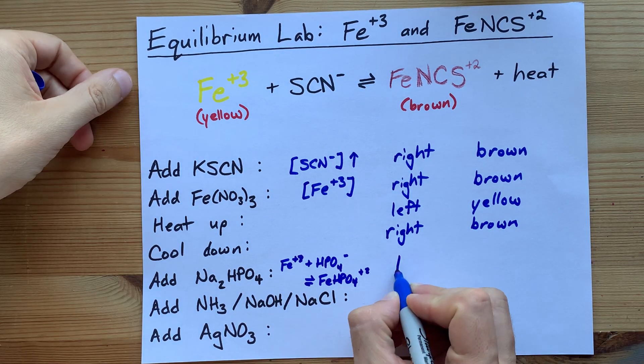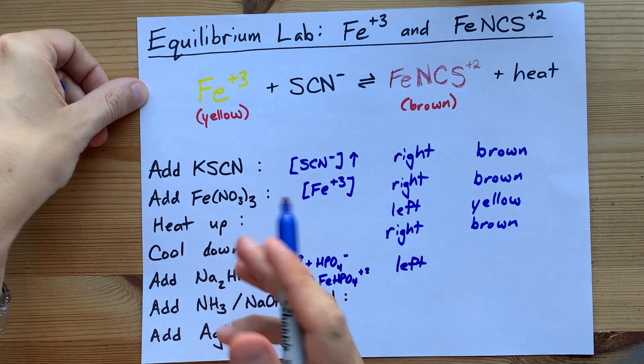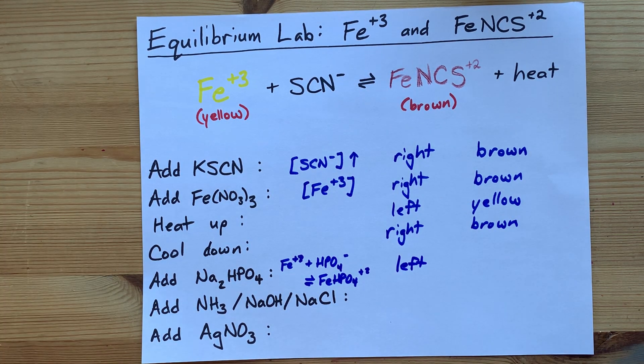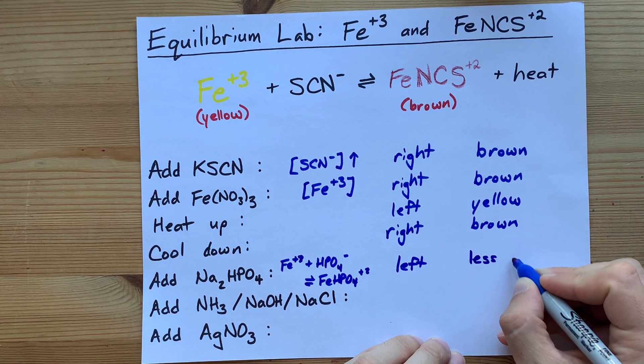That's going to pull the equilibrium to the left. You want to replace the Fe that you've lost, and the solution itself will probably appear less brown.